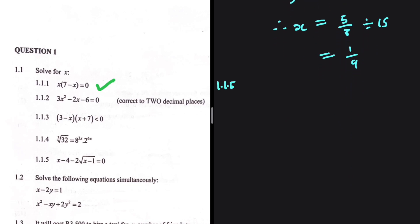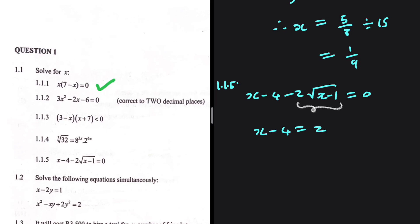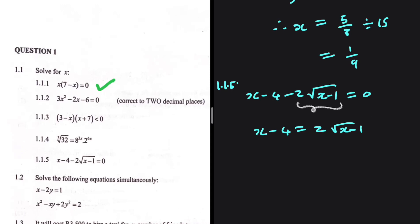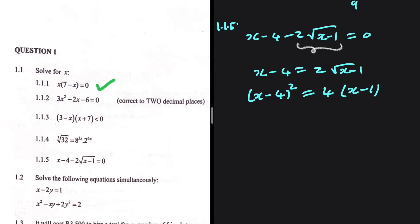For 1.1.5, we have x minus 4 minus 2 times the square root of (x minus 1) equals 0. Let's take the square root term to the right-hand side: x minus 4 equals 2 times the square root of (x minus 1). Because we have a square root, it's better to square both sides. On the left we get (x minus 4) squared, and on the right we get 4 multiplied by (x minus 1).